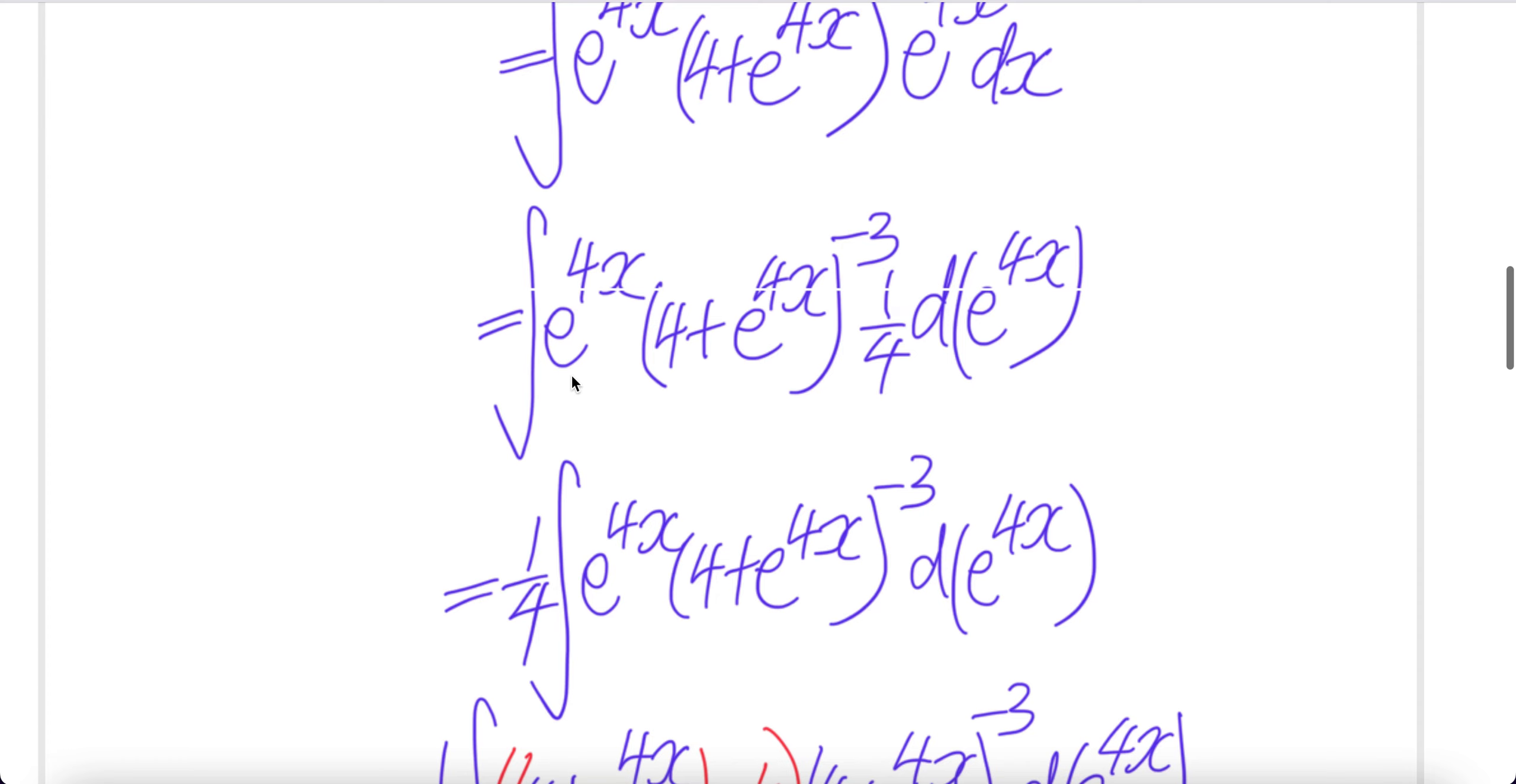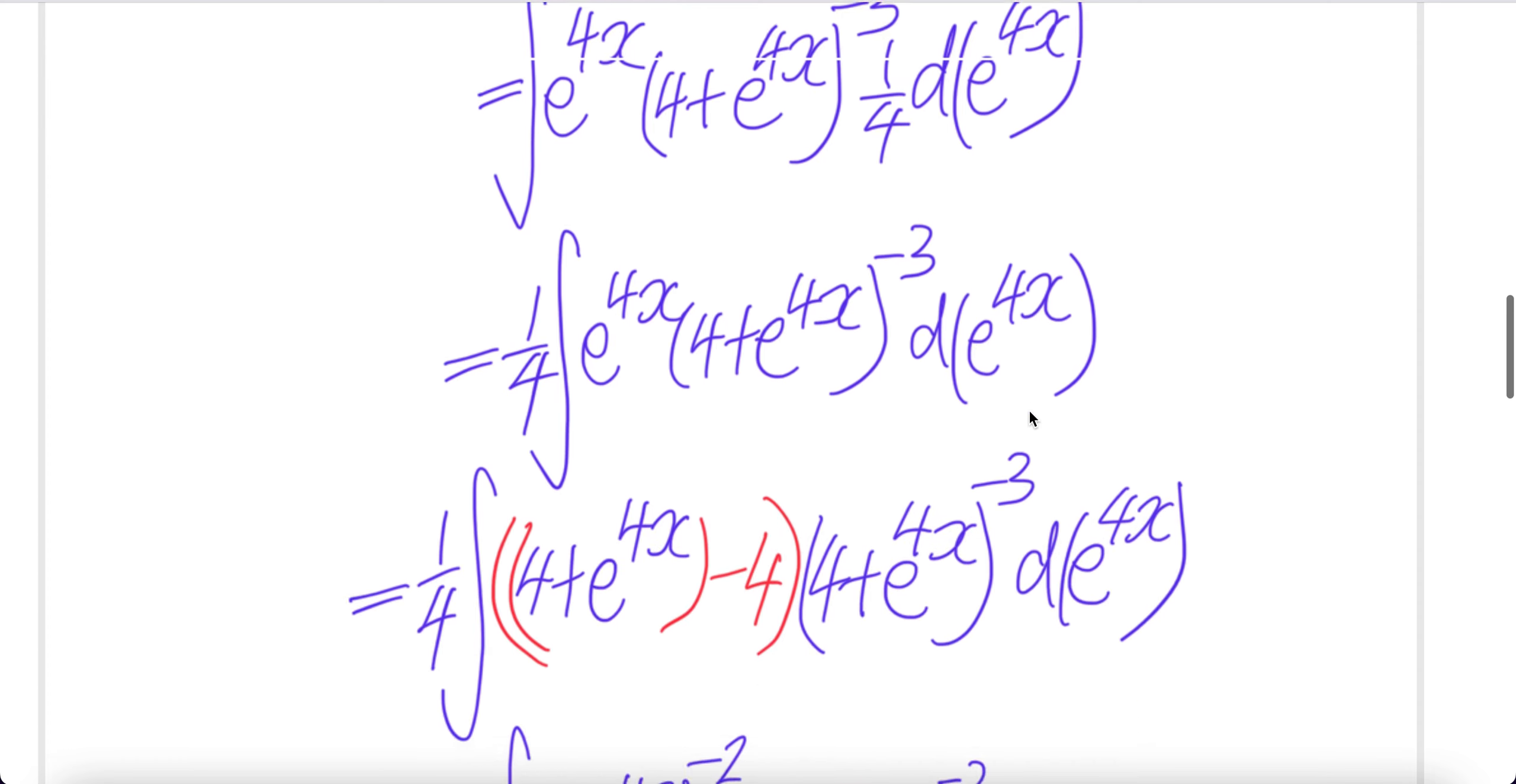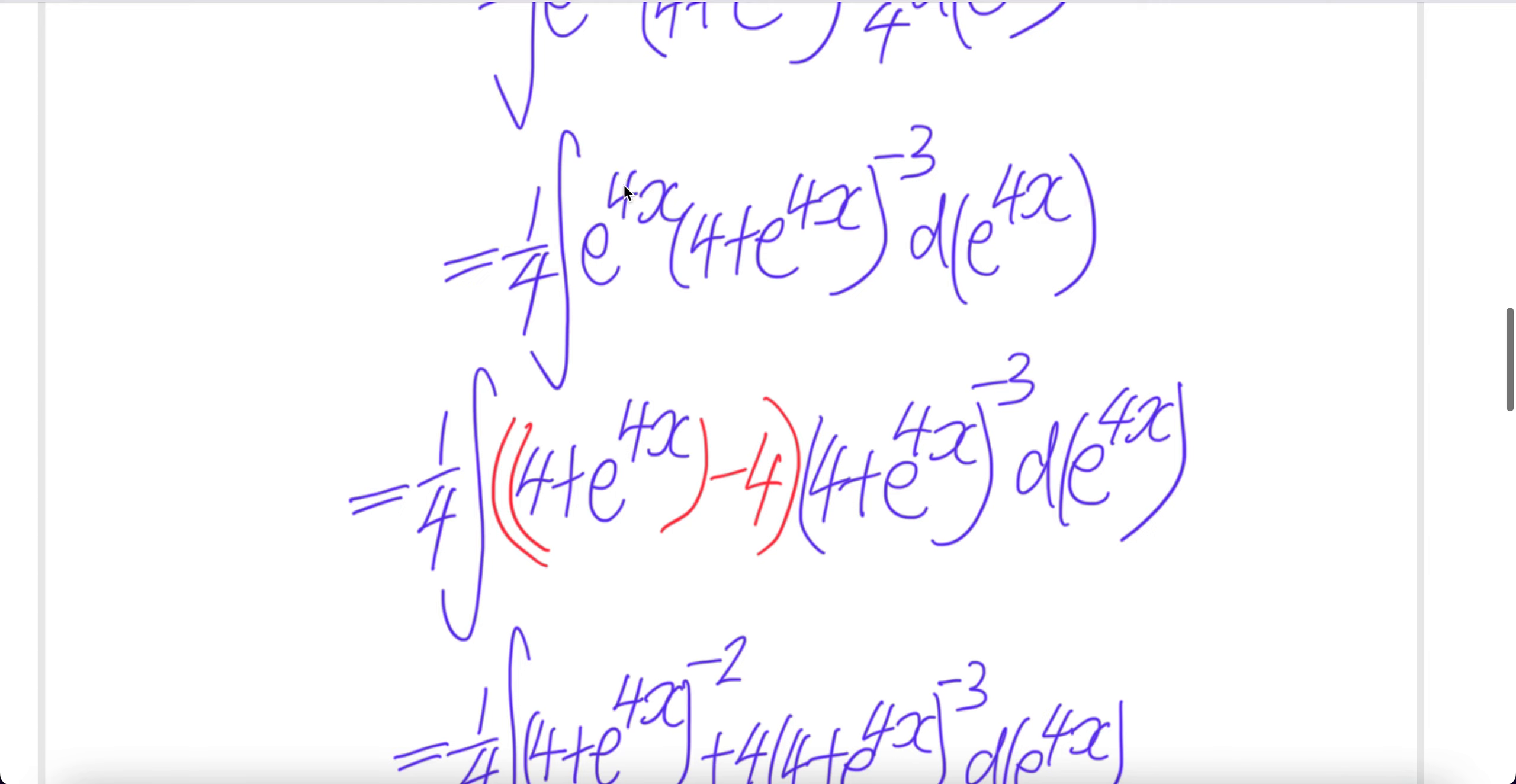Quarter out of the integral. And then you have this piece here, d e to the power of 4x. Now express this in terms of 4 plus e to the power of 4x. Write that. And then you need only e to the power of 4x. This is extra, so you remove that. Basically this integral is equal to that.